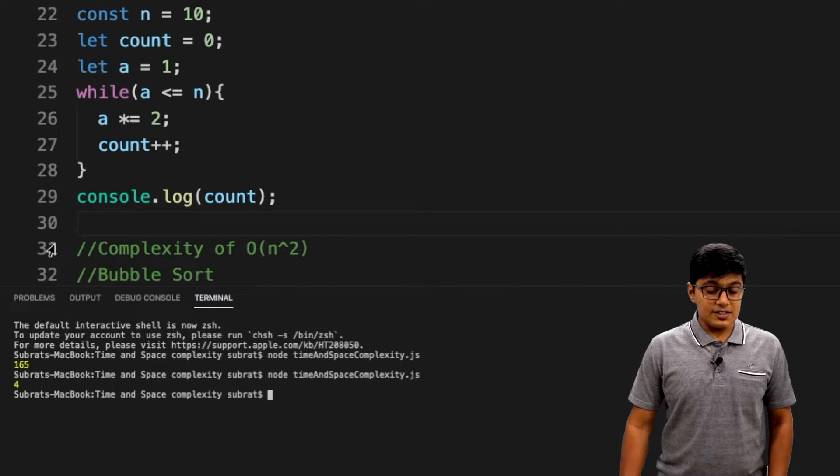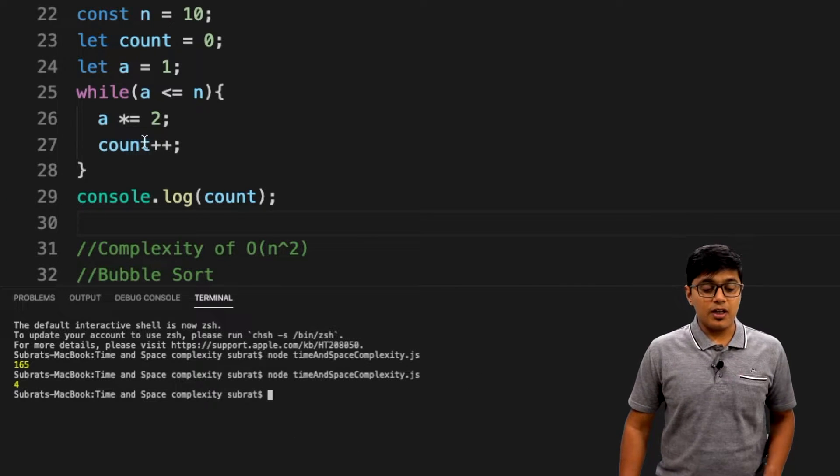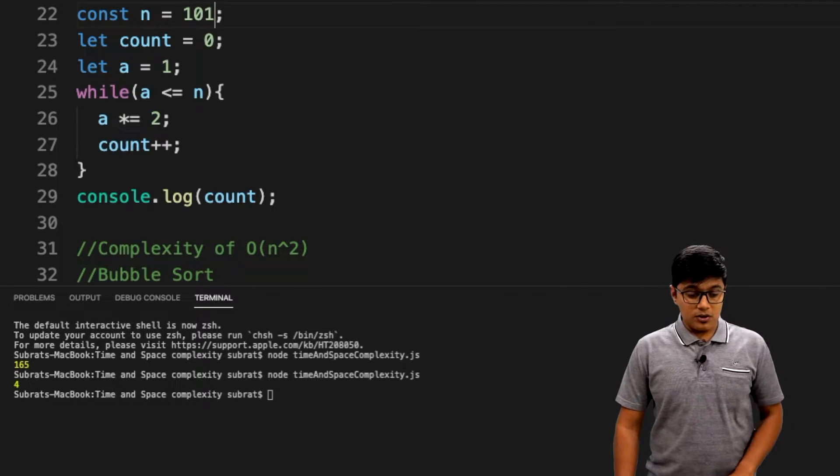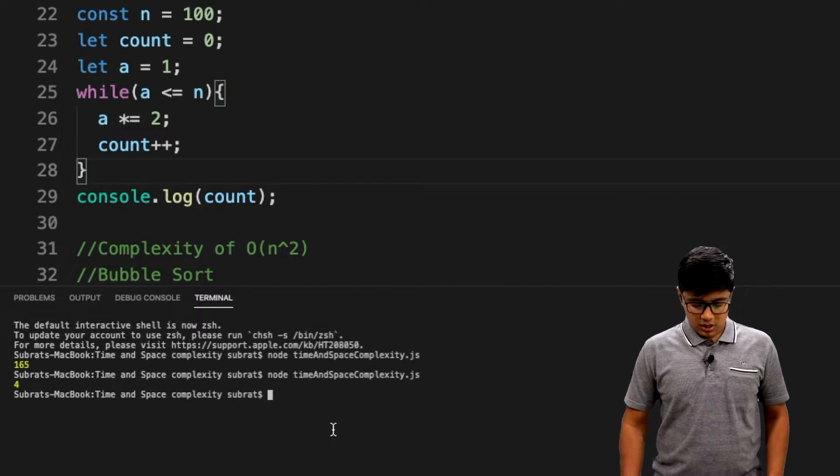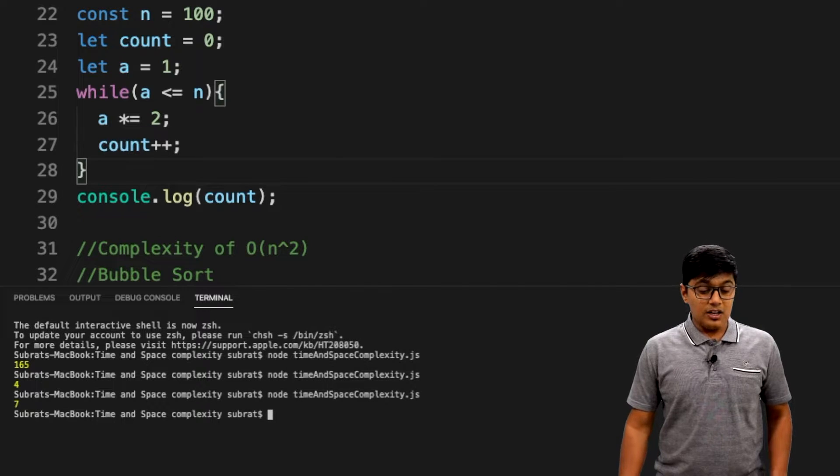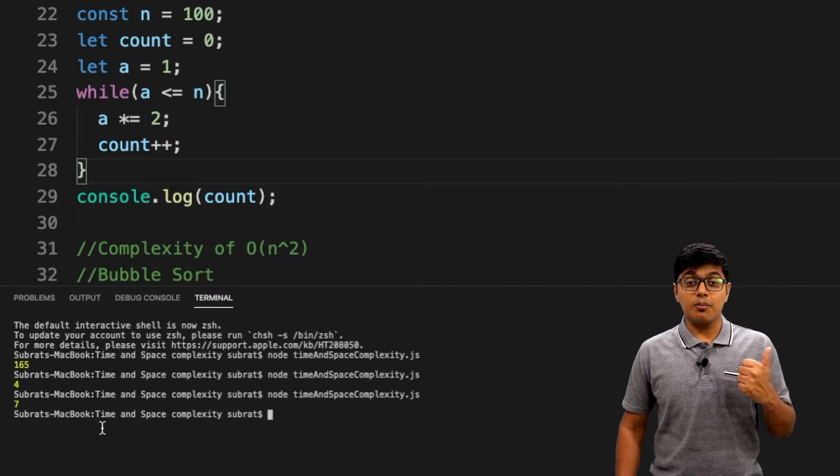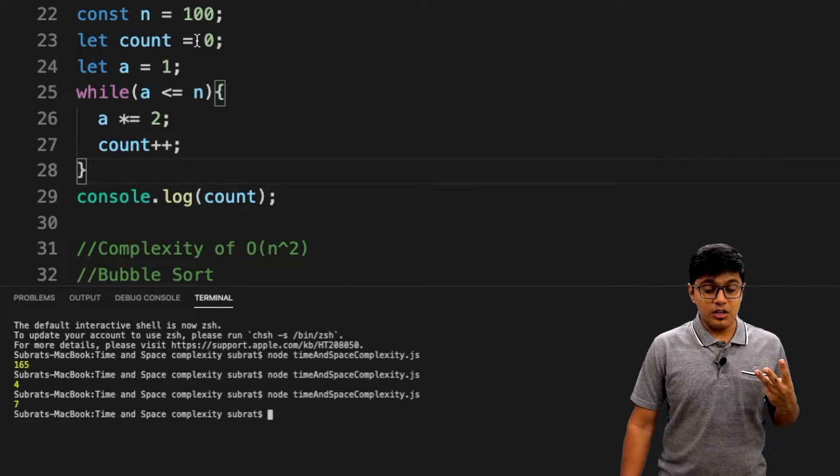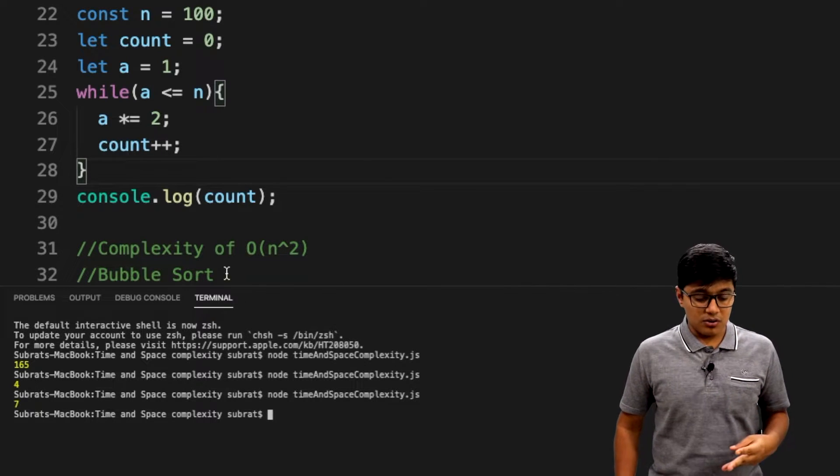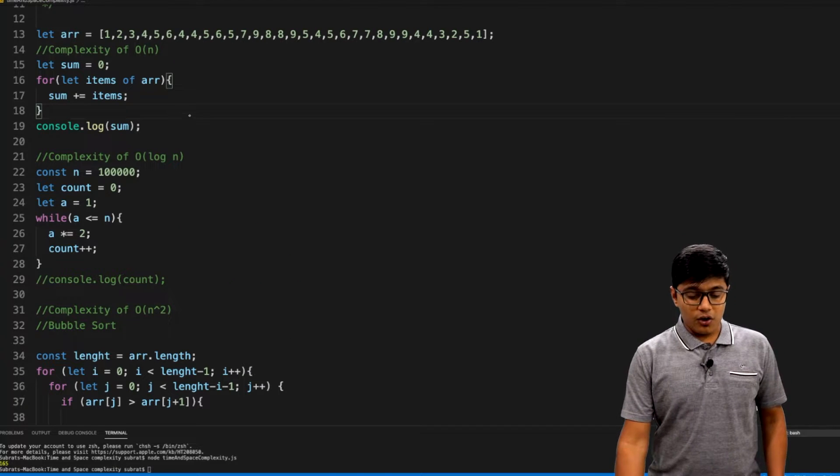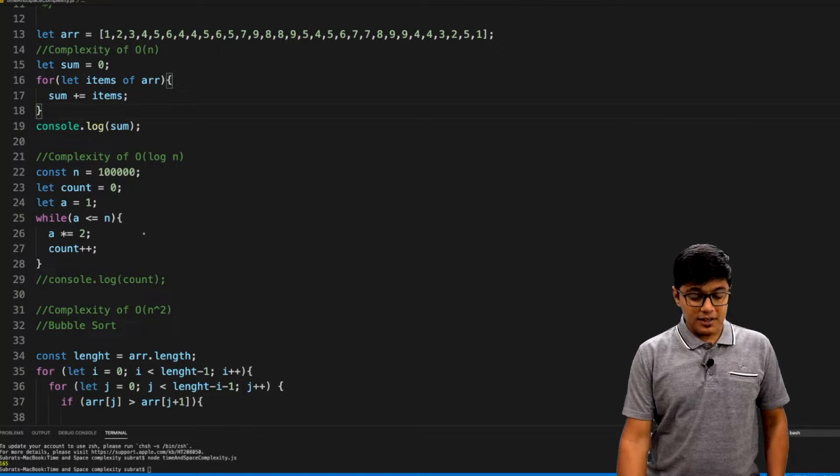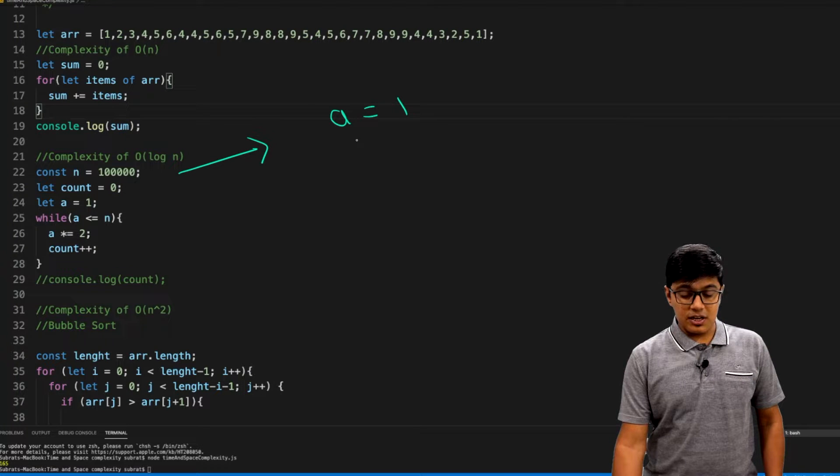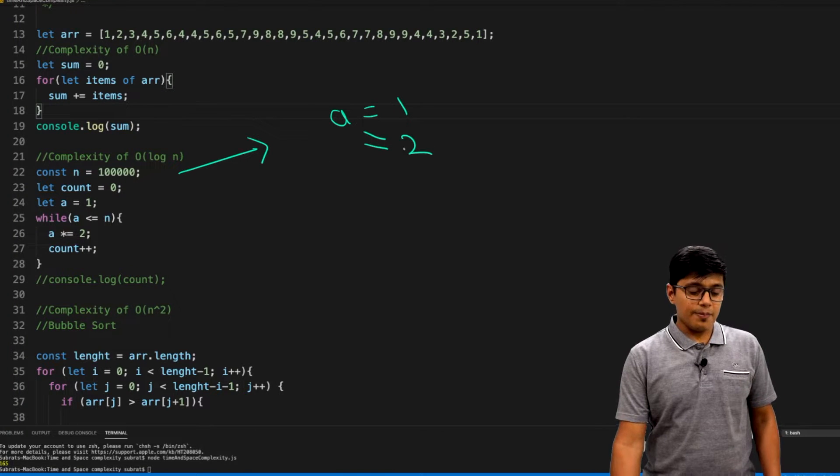You can see it ran four times, and n is 10. Now I will increase the value to 100 and run the application again. It ran seven times. That means only three iterations more, and we increased the value 10 times.